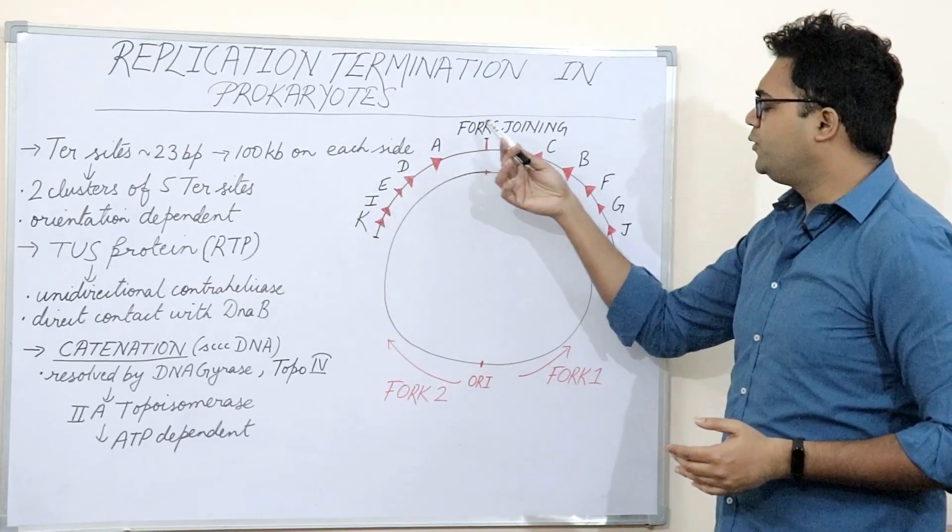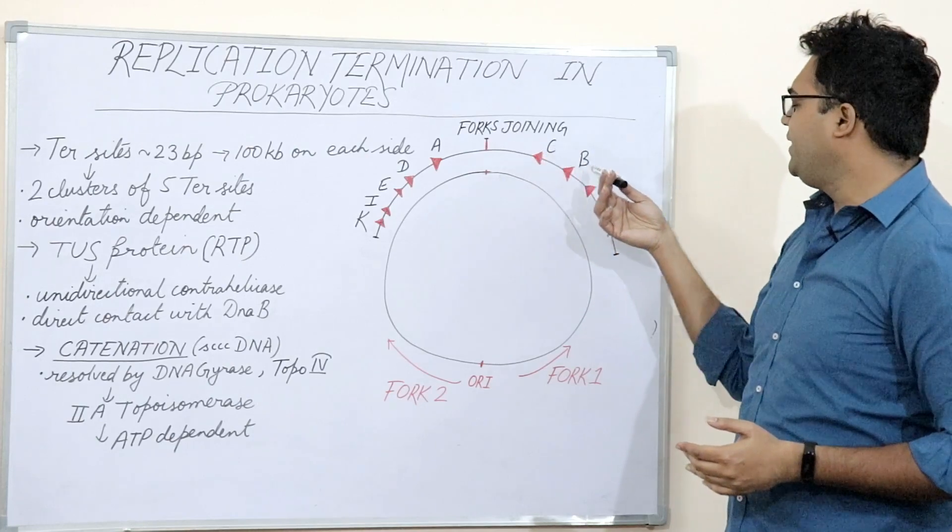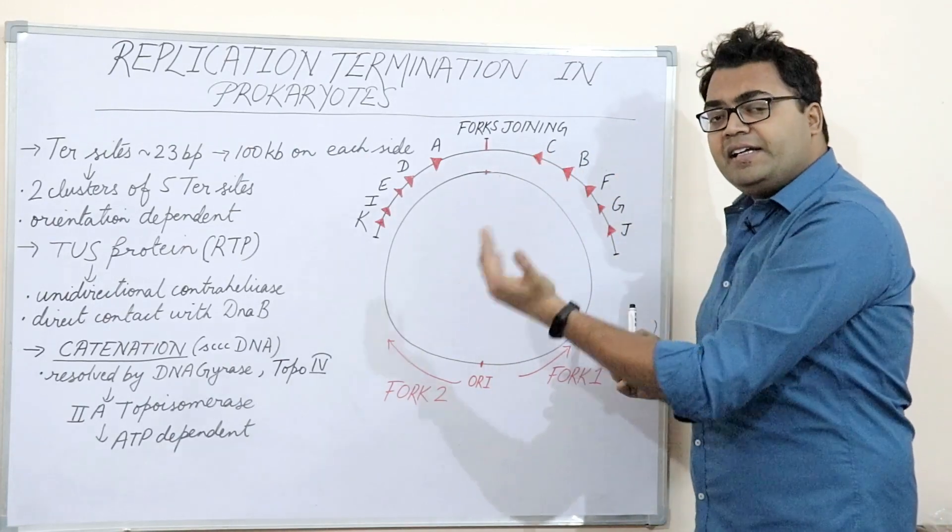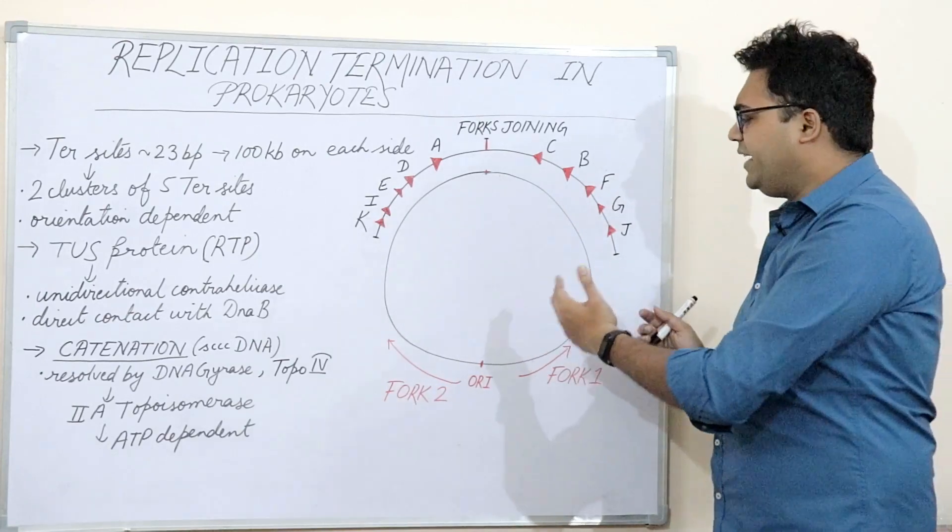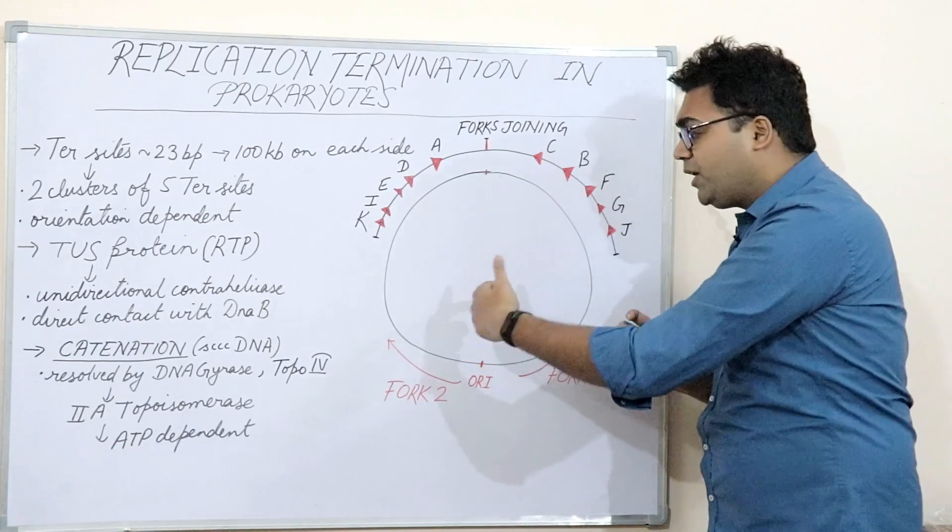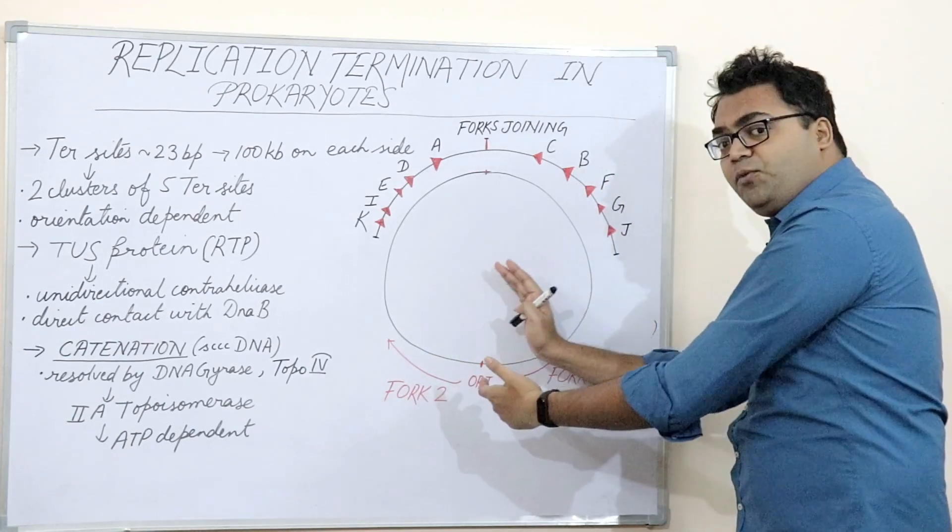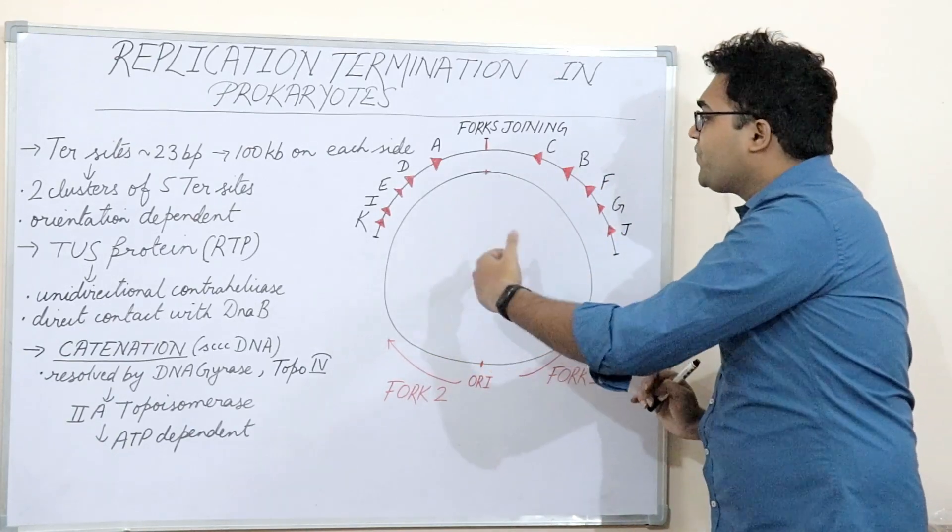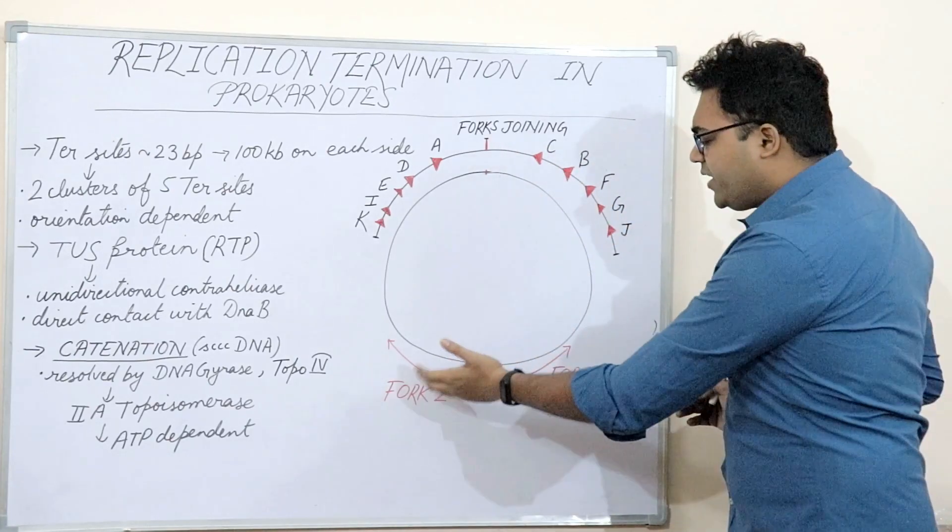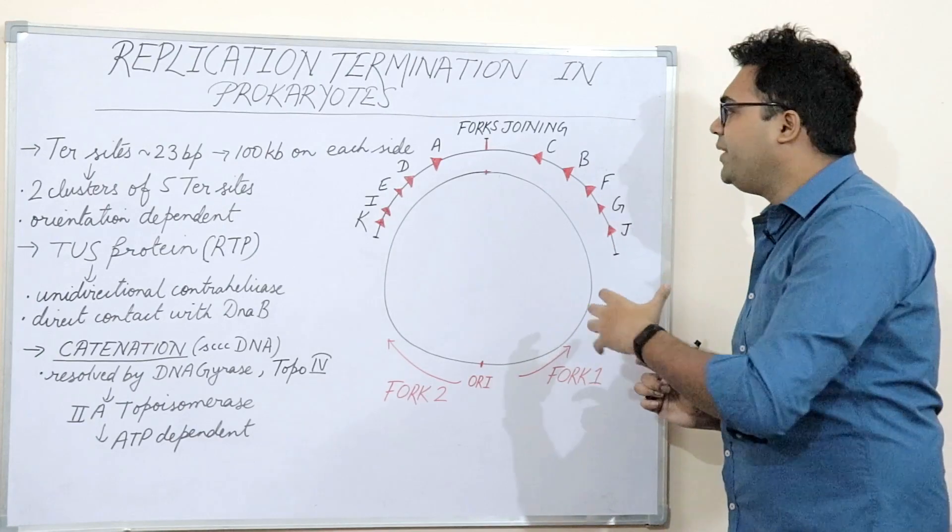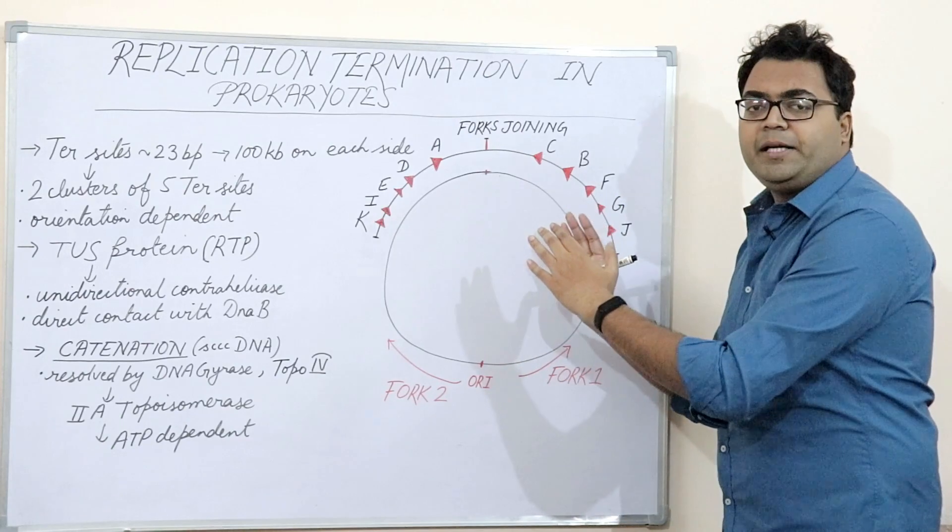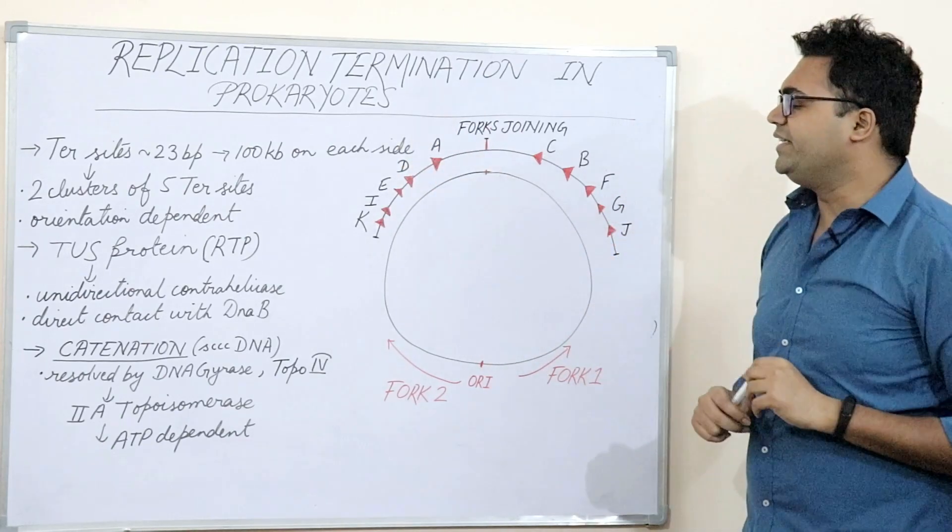And when replication fork 2 eventually reaches C, B, F, G, J, the direction of these termination sites is opposite. It counters the direction of replication fork 2. Thereby these sites become non-permissible for replication fork 2 whereas they were permissible for replication fork 1, and thereby these sites would prevent the traversal or travel of replication fork 2. It would seize its movement and thereby cause the complete termination of the DNA replication.